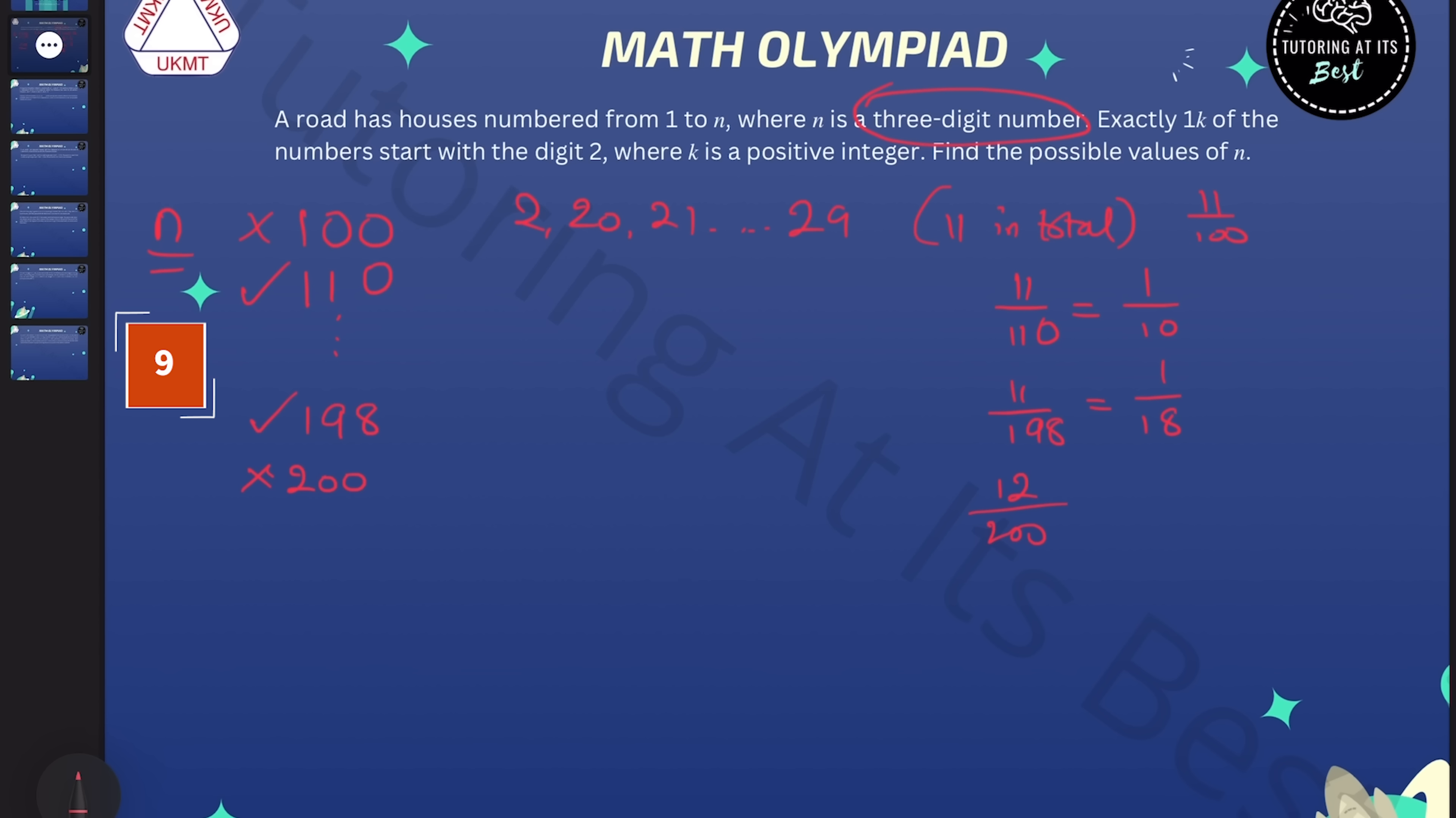Now, as we increase the house numbers, if we do 200 plus a, every single one of those will start with a 2. So let's look at 12 plus a over 200 plus a. So now we need to think about when 200 plus a is divisible by 12 plus a.